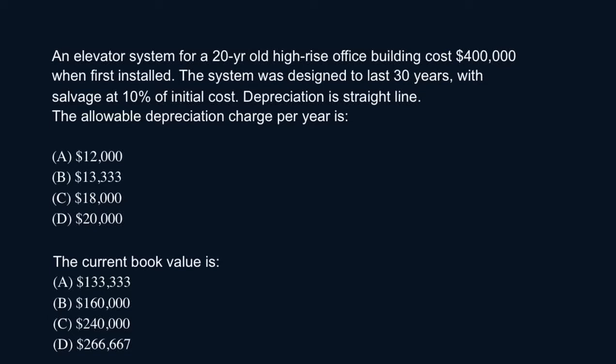All right, so this problem is a depreciation straight line depreciation example. An elevator system for a 20-year-old high-rise office building cost $400,000 when first installed. The system was designed to last 30 years, with salvage at 10% of initial cost. Depreciation is straight line. Calculate the allowable depreciation charge per year.